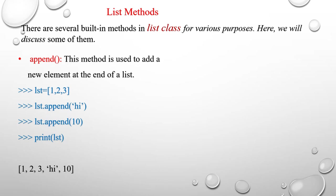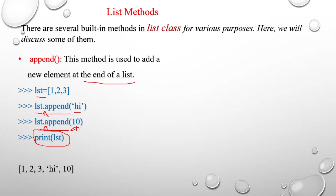For example, append is one of the built-in functions in class list. This method is used to add a new element at the end of a list. For example, you take list equal to 1, 2, 3. Here I am appending i, and after that I am appending 10. The list variable name is LST. Using the dot operator, we invoke the built-in function append and pass the argument i, then pass 10. If you print LST, the Python interpreter will print 1, 2, 3, i, and 10.